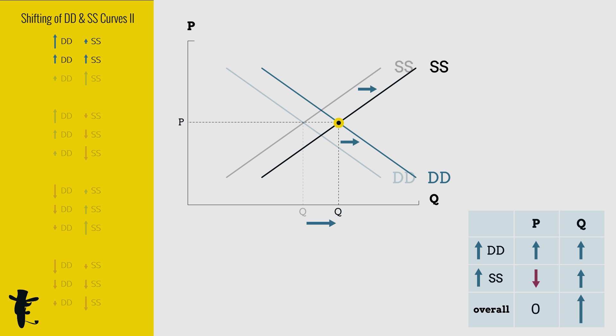Another way to think about it: because demand and supply increase by the same magnitude, price increases from demand and price decreases from supply with the same magnitude. Overall, it's a wash — no change in price.